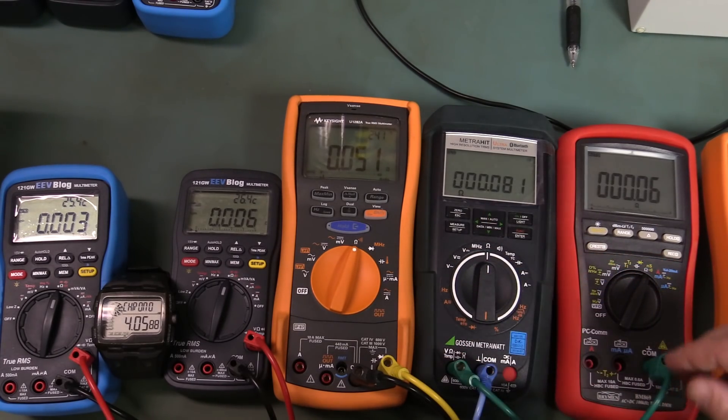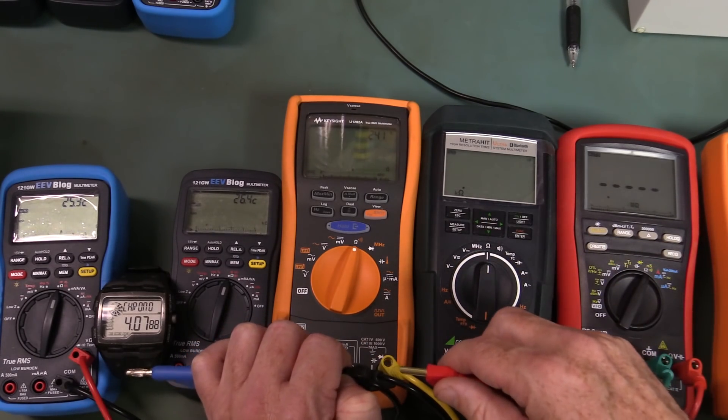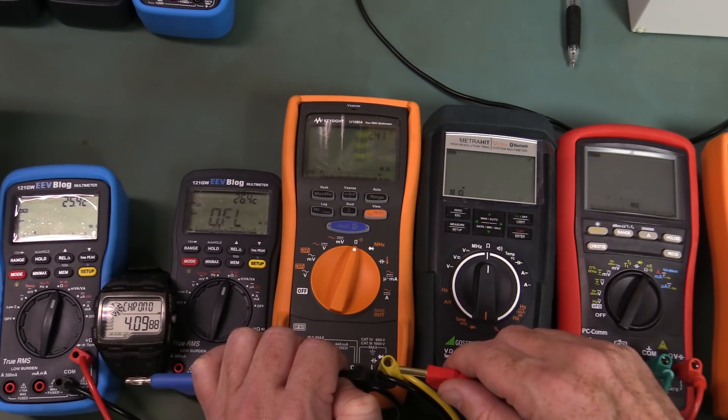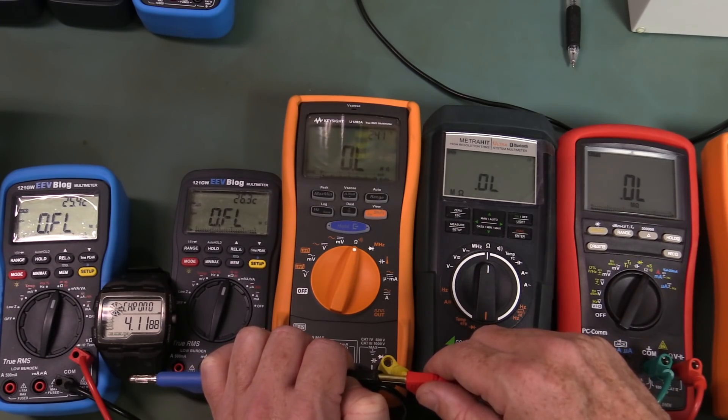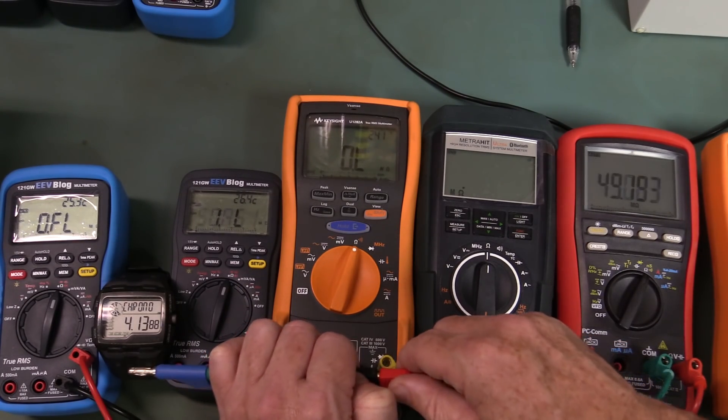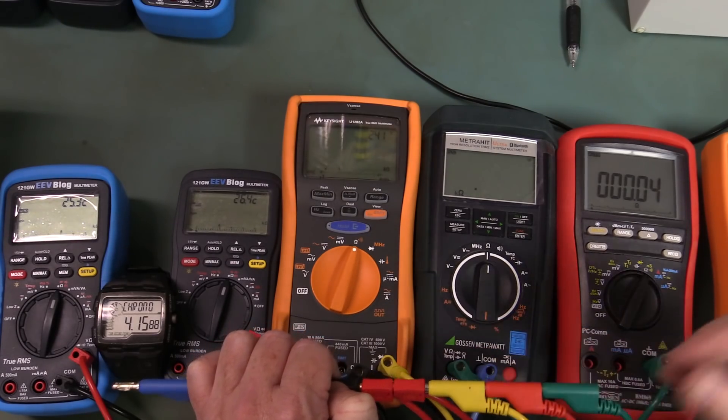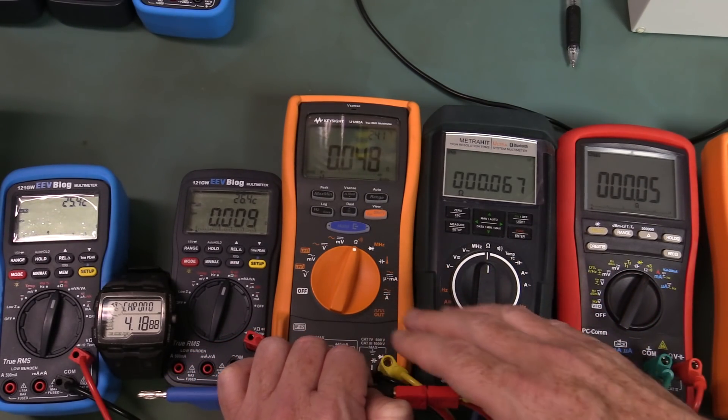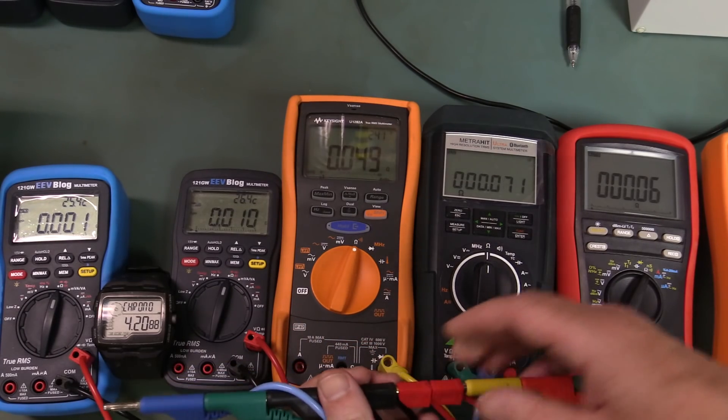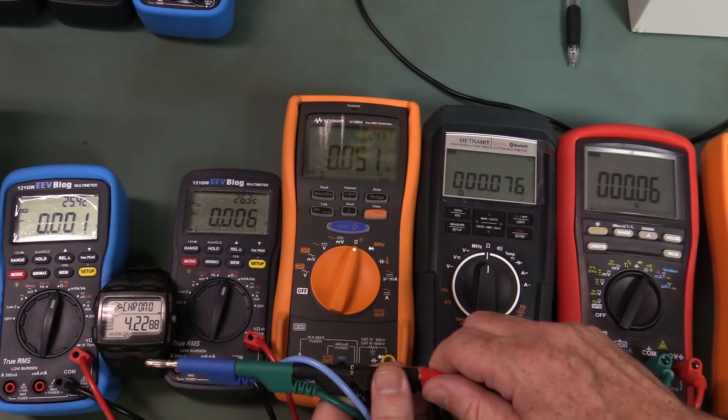And of course it's faster than Gossen and Metro here, but you saw how fast the BM869 is, and this is just a nature of how various manufacturers implement the auto-ranging feature on the chipset. So it is what it is.